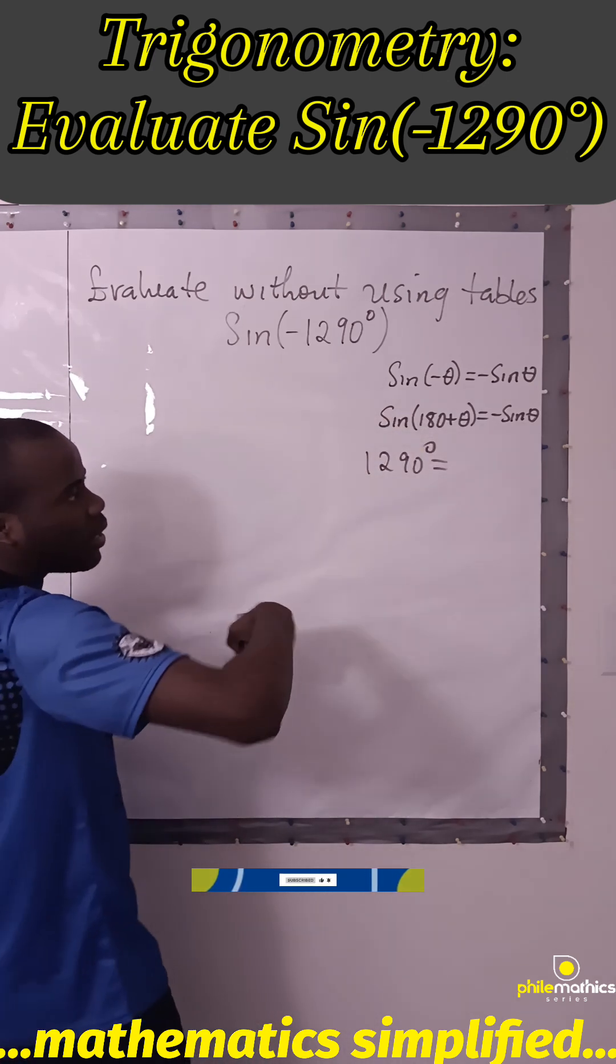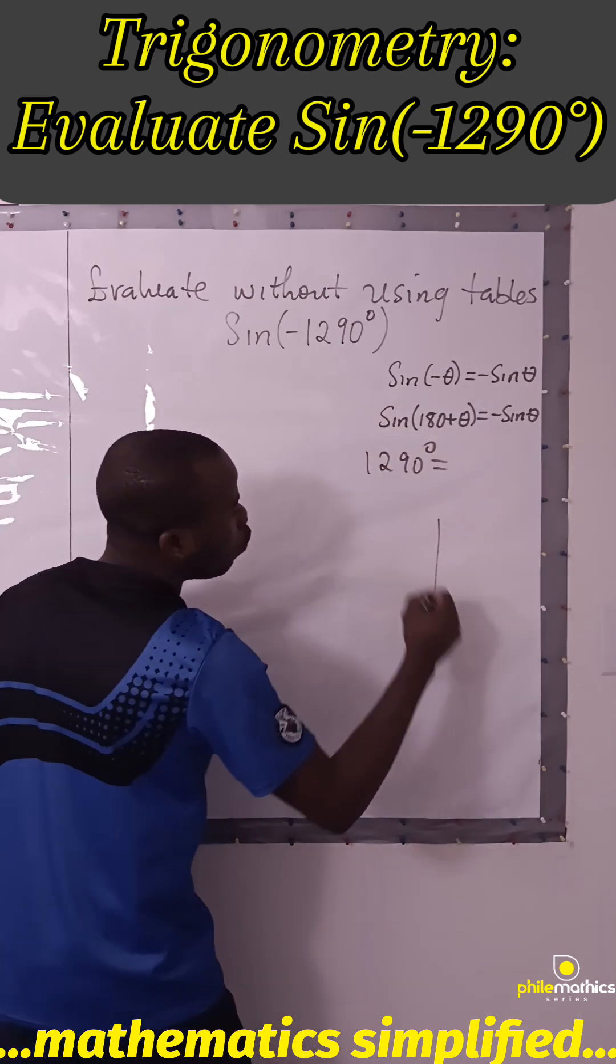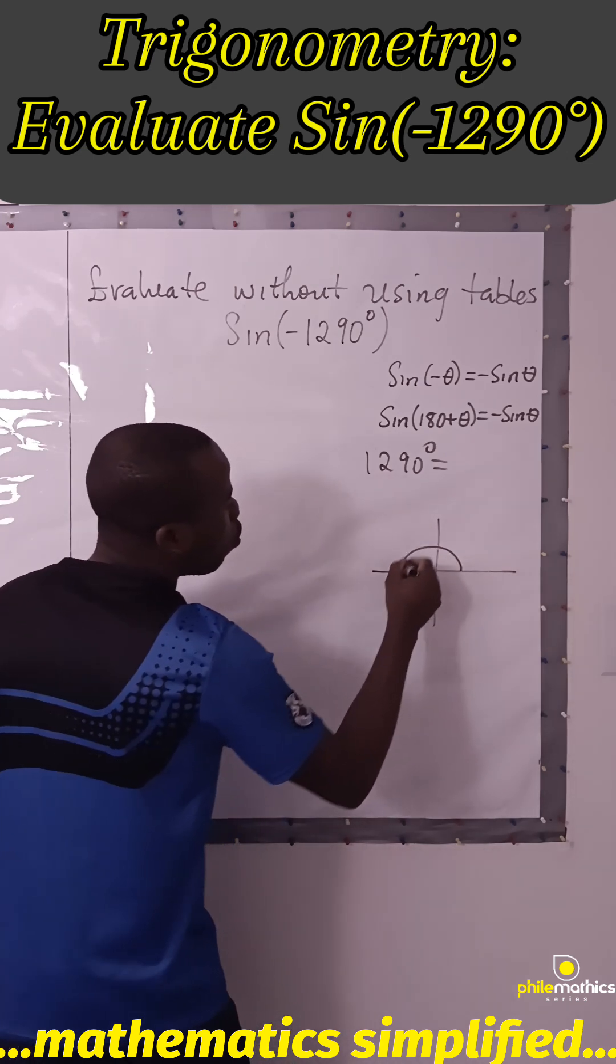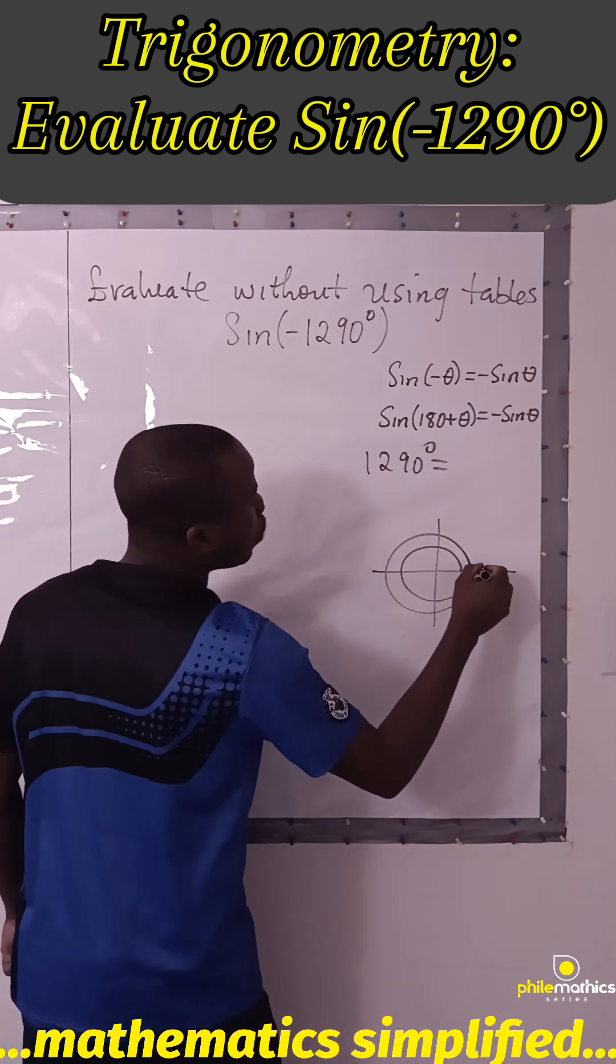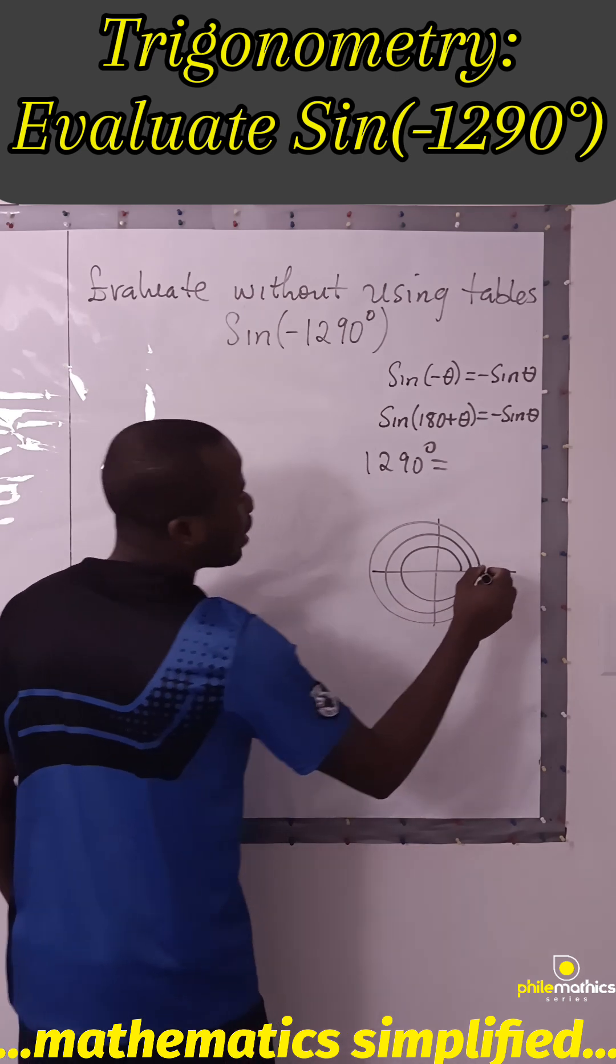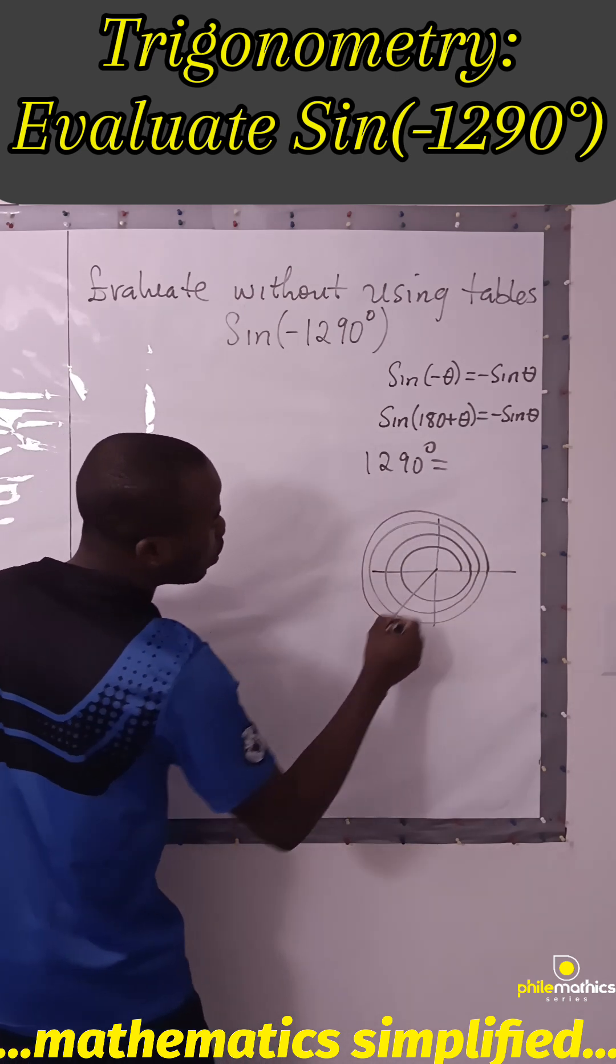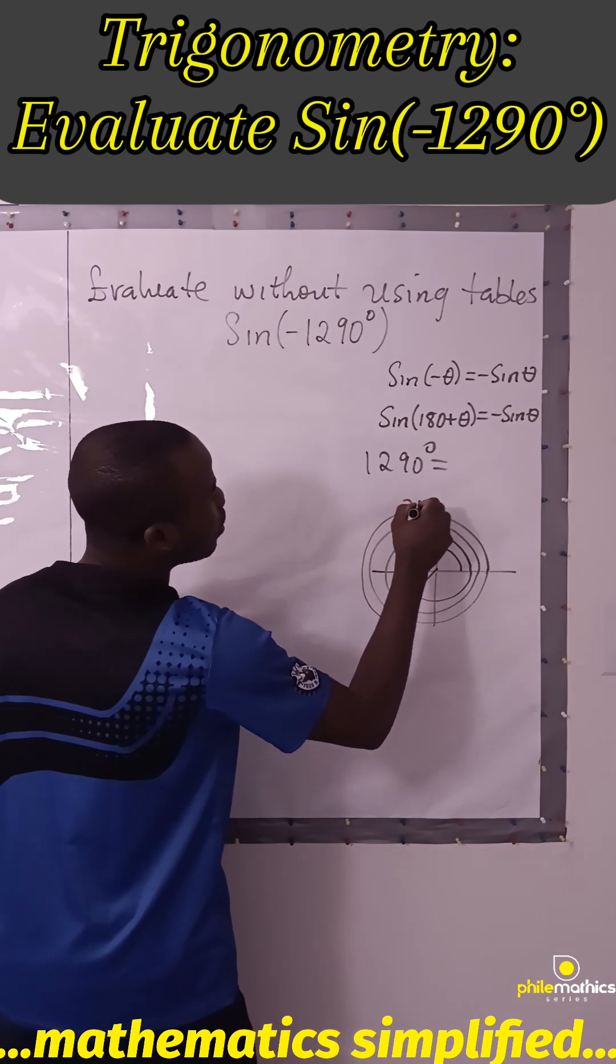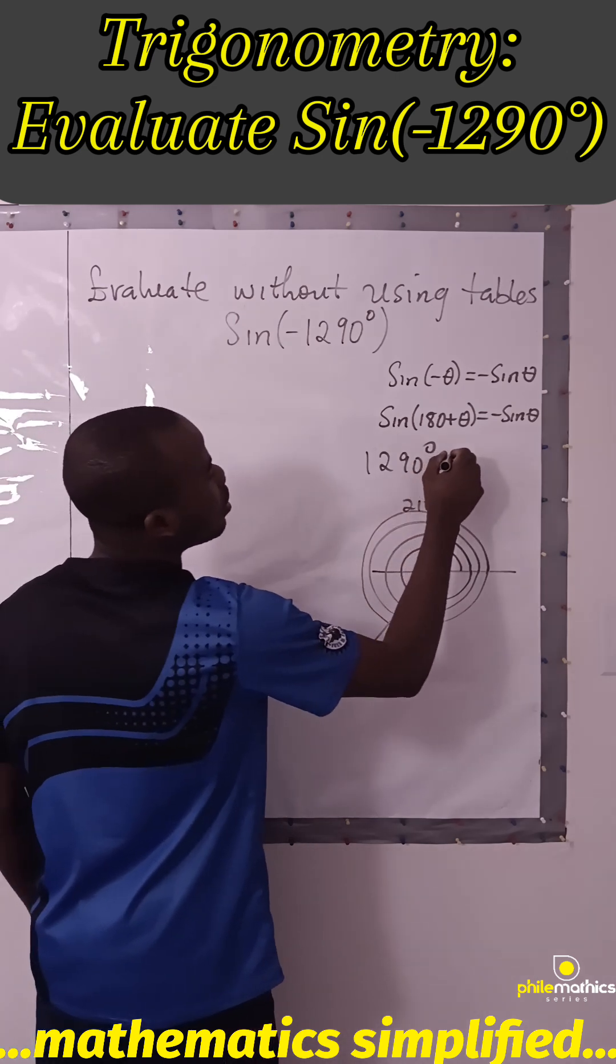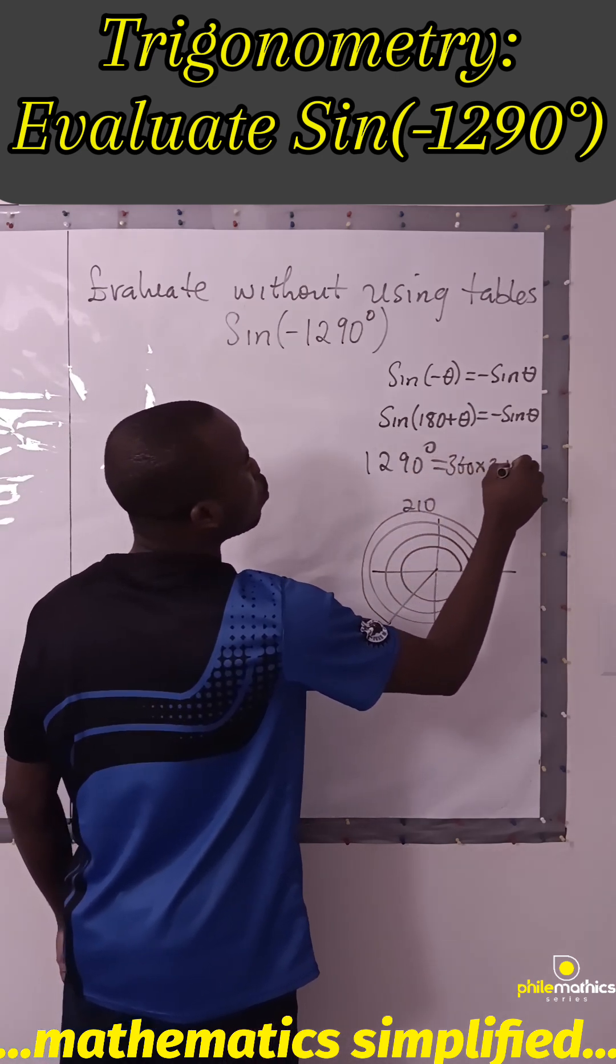So that is, if we have the quadrant, it will go 360, 720, 1080, you add 210, which will be on the third quadrant. So this is 360 times 3 plus 210.